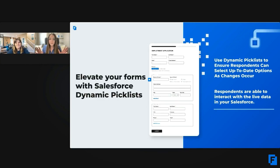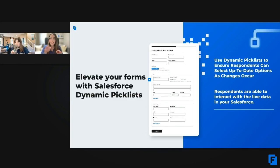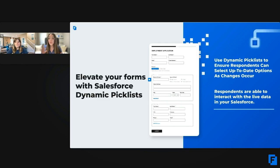If you have a pick list in Salesforce that needs to be updated on a regular basis — especially if it needs to be updated across multiple forms — it's so nice being able to pull in those options as they're updated in Salesforce to all of those forms. I've seen them used for everything from events to course registrations, lists of departments, lists of contacts you can reach out to if those are changing regularly. It gets really, really cool.